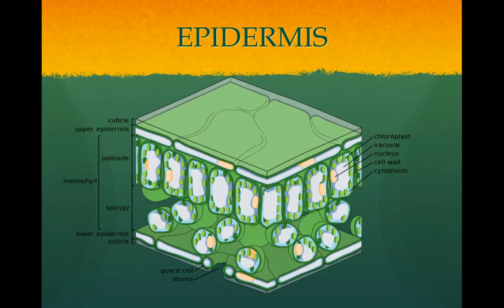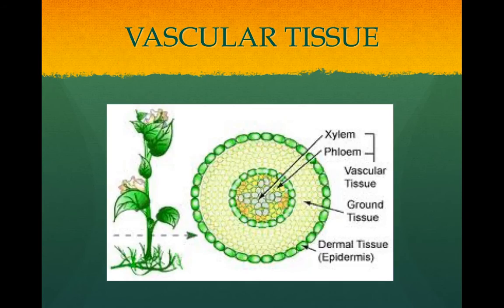Looking at the different types of tissues found in plants, beginning with the epidermis — that is like the skin, and it covers and protects the plant. The cuticle is a waxy coating secreted by the epidermis. The vascular tissue is the xylem and phloem. It is arranged in vascular bundles in the stems, and is for support and transport. It is also what is found in the veins of a leaf.